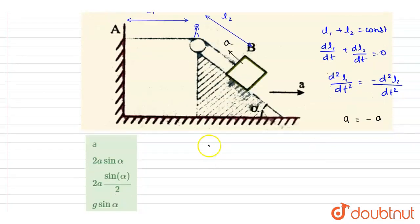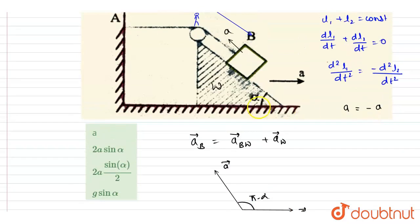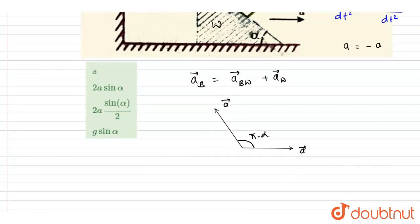Now if I write down the acceleration of the block with respect to ground, it will be acceleration of the block with respect to wedge plus acceleration of the wedge. So we have to add the acceleration of the wedge. If you see, the acceleration of the wedge is at an angle alpha, and acceleration of the block is a here. And this angle will be phi minus alpha. If you see this angle is alpha, so this angle will be phi minus alpha.